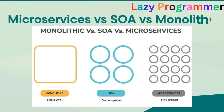Another common interview question asks about the main difference between monolithic, SOA, and microservices architectures. Monolithic architecture is like a single big container where all components of the application are bundled together tightly, built as one large system with one code base. SOA (service-oriented architecture) is a group of services interacting and communicating with each other — it can be simple data exchange or involve several services coordinating activities. Microservices architecture, as already covered, has loosely coupled components that can be independently deployed.